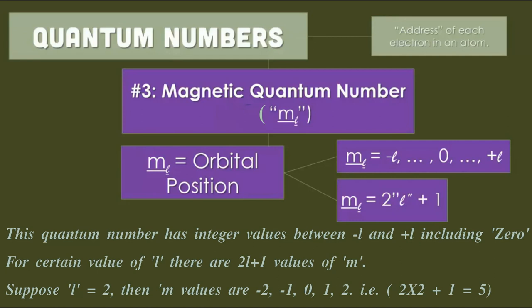For certain value of l, there are 2l plus 1 values of m. Suppose l equal to 2, then m values are minus 2, minus 1, 0, 1, and 2. How can we get that? We know that 2l plus 1 formula: 2 times 2 plus 1, that equals 5.